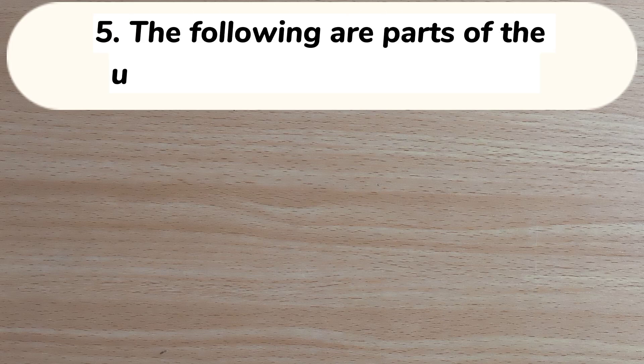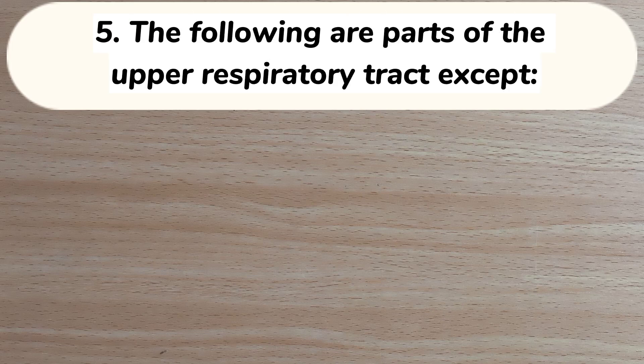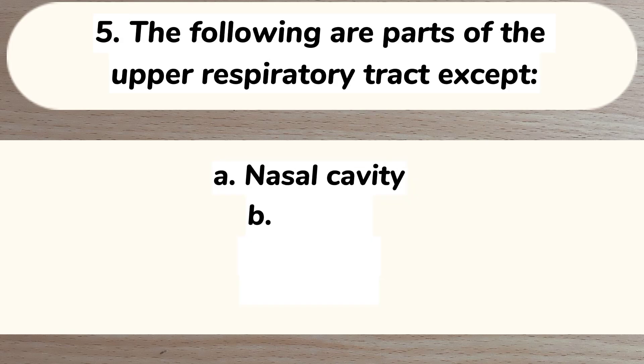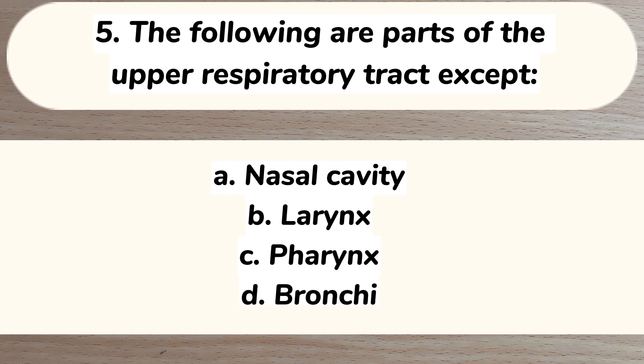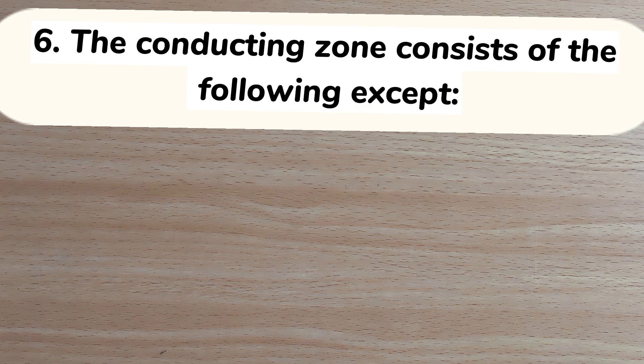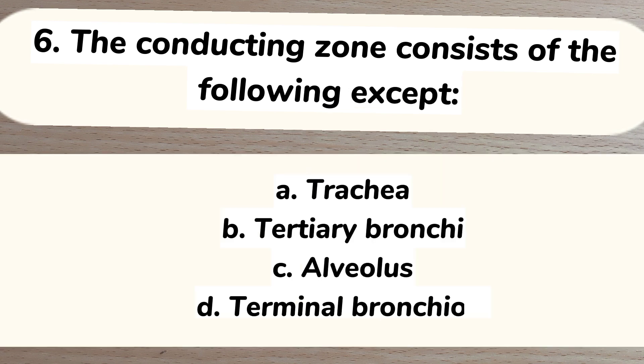Number 5. The following are part of the upper respiratory tract except: A. Nasal cavity. B. Larynx. C. Pharynx. D. Bronchi. Answer: D. Bronchi.